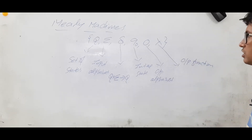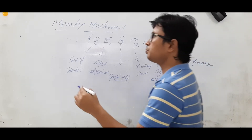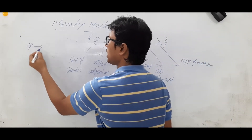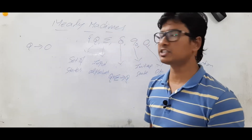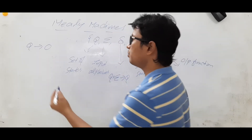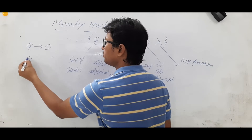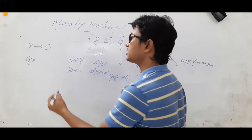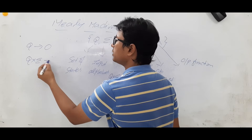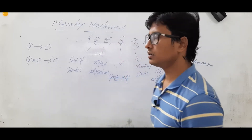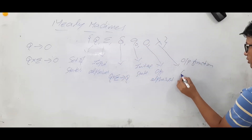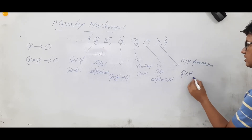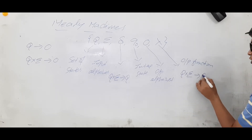What is the output function of a Moore machine? The output function of a Moore machine is from Q — for each state you will have an output. Whereas in a Mealy machine, the output function is: from a state, on taking an input alphabet, you will get an output.